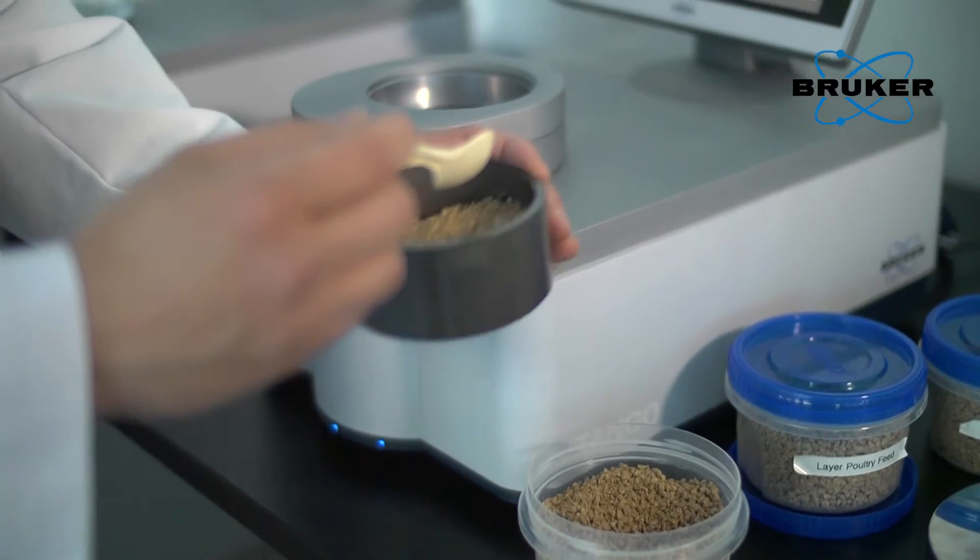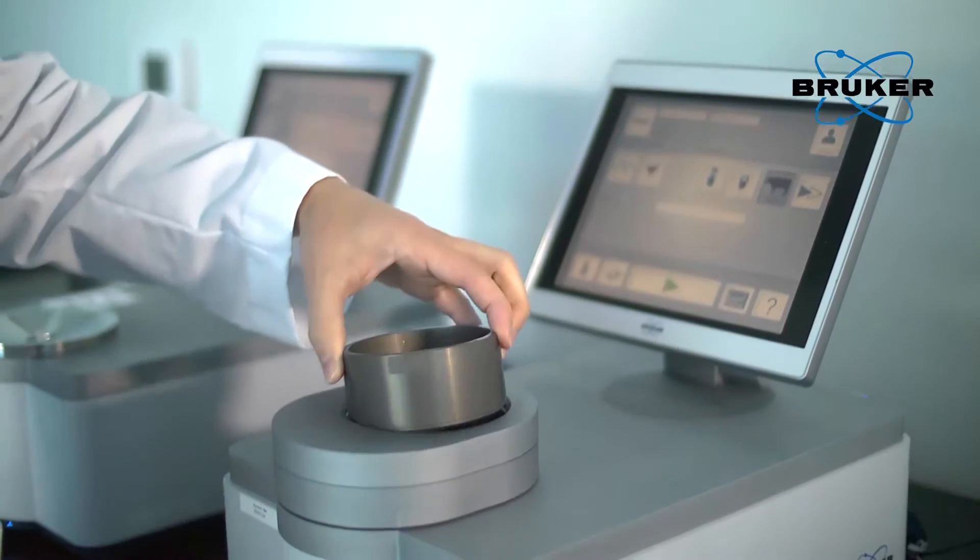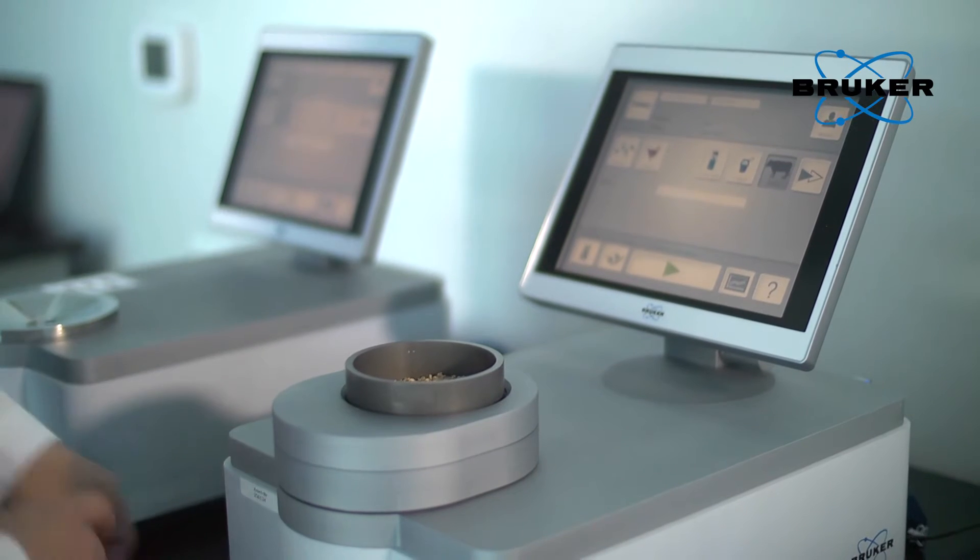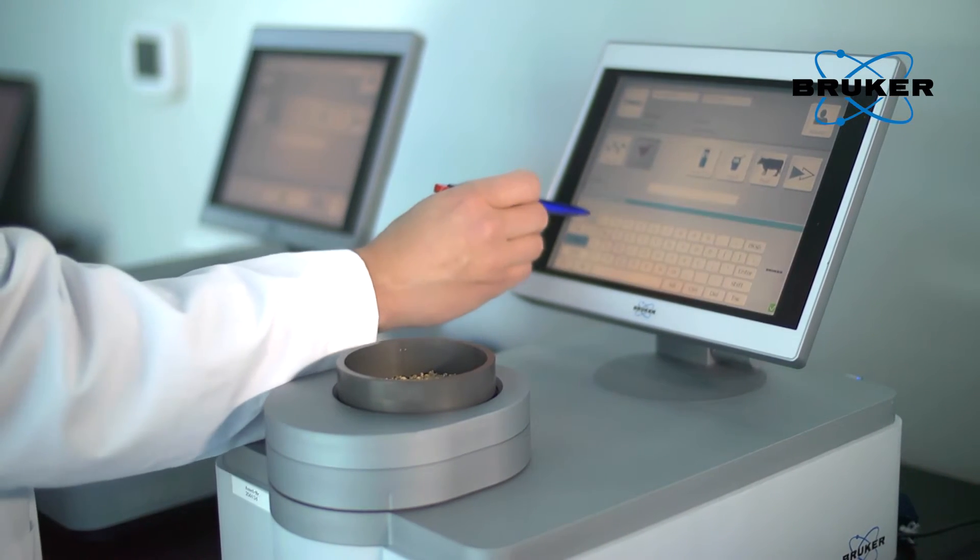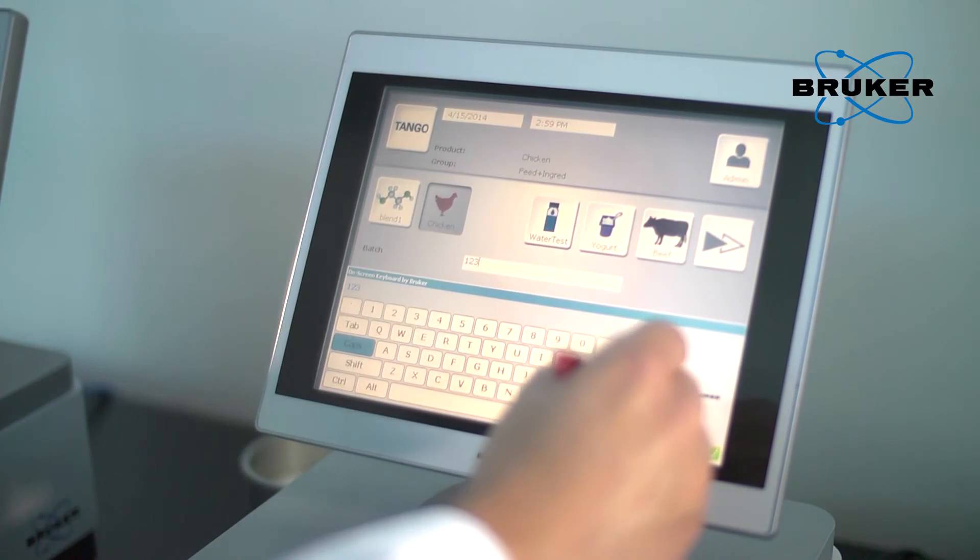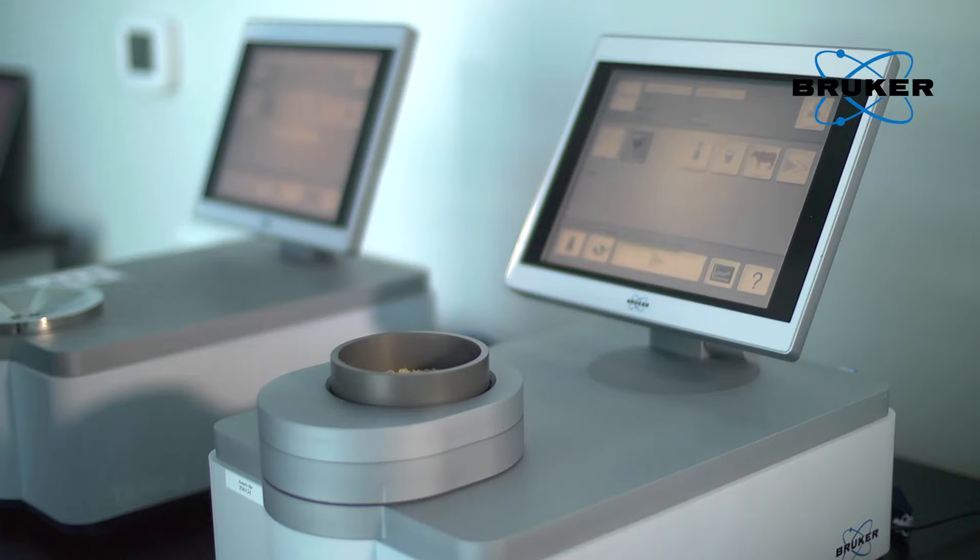The sample is simply filled into the measurement cup or sample vial and placed onto the spectrometer. The product is selected by either pressing on the respective product icon or by using a barcode reader. A simple touch on the screen starts the measurement. The progress is displayed through the green status bar. After approximately 15 to 30 seconds, the measurement is complete.